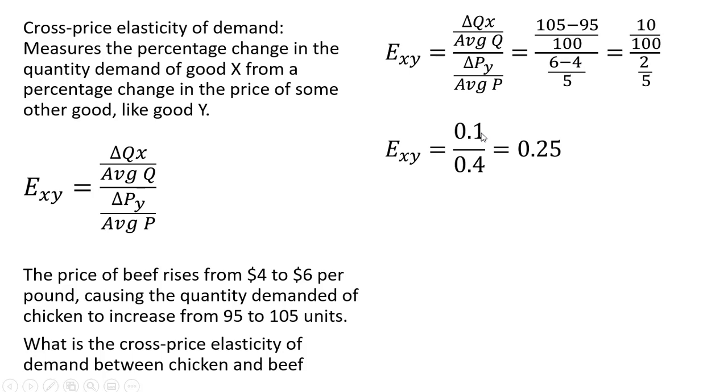10 divided by 100 is 0.1. 2 divided by 5 is 0.4. And then 0.1 divided by 0.4 gives us a cross-price elasticity of 0.25.